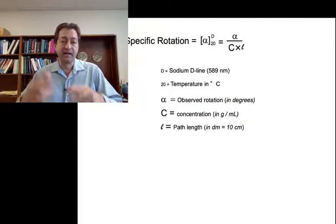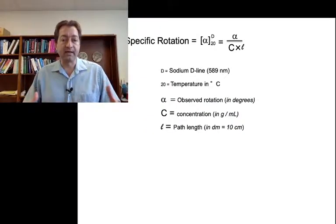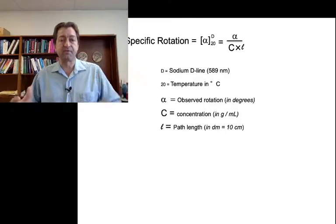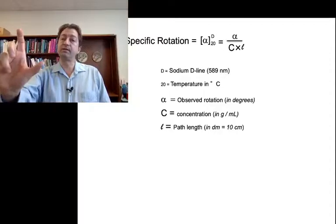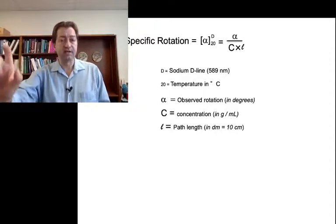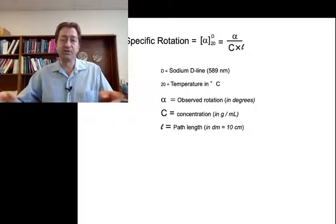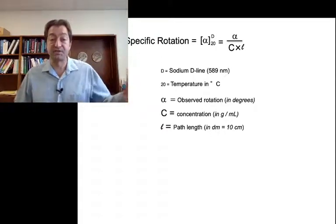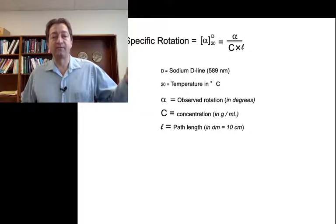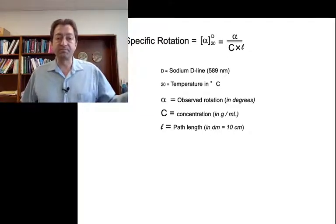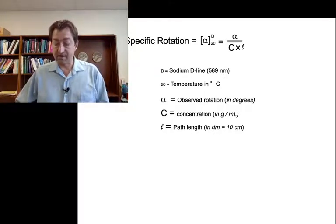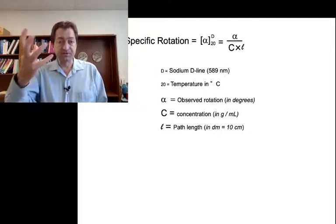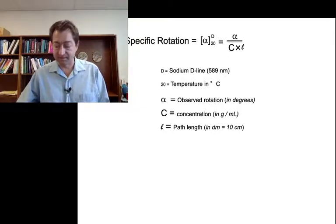We can calculate something called a specific rotation, where we measure the observed rotation in degrees — how far we have to rotate that second polarizing filter — along with the concentration of our solution, the length of that tube, the temperature, and we use the sodium D line, a specific wavelength of light. We get something called a specific rotation, or alpha-D value. We're not going to ask you to calculate this in organic one, but just to let you know where we get these values from.